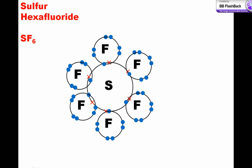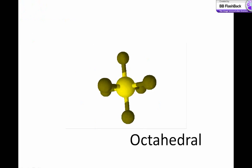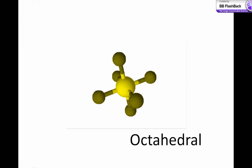So the bonding electron pairs arrange themselves to minimize the repulsion from each other. This results in an octahedral shape.